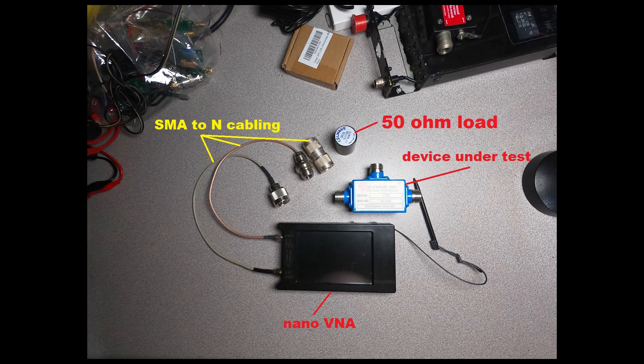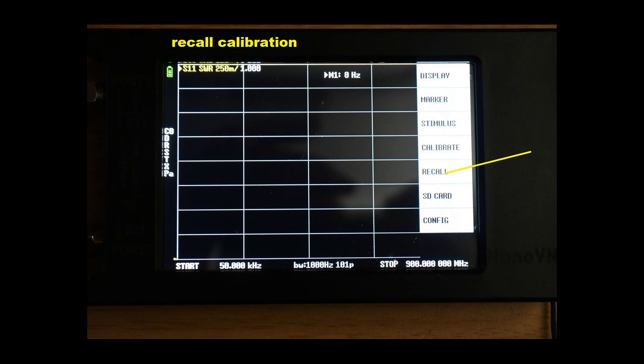For our equipment we will be using a 50 ohm load and two short SMA male to N male and N female RG216 jumpers. We will also be using a military surplus N male to male adapter. I am going to test this device for you on camera with the belief that the viewer has a basic understanding of the Nano VNA and how to calibrate the device with the equipment you will use for testing.